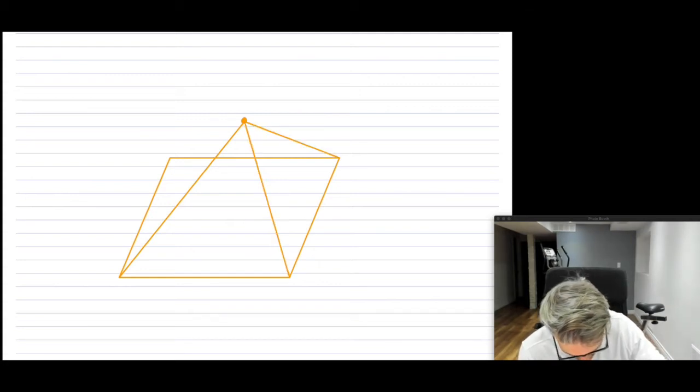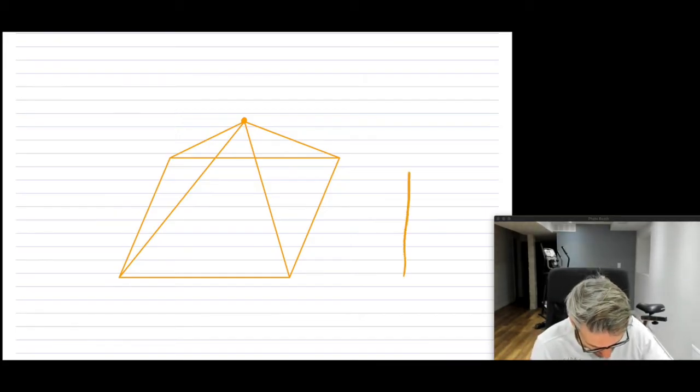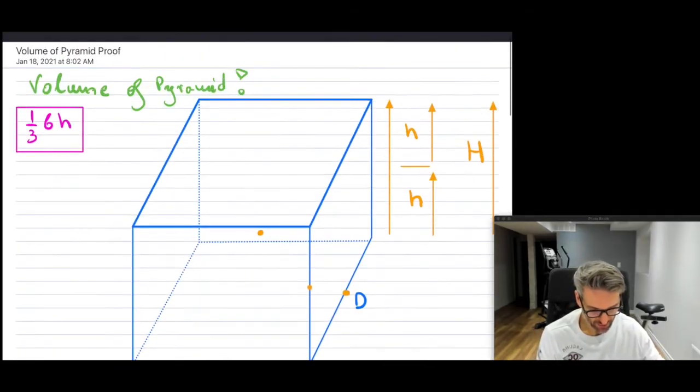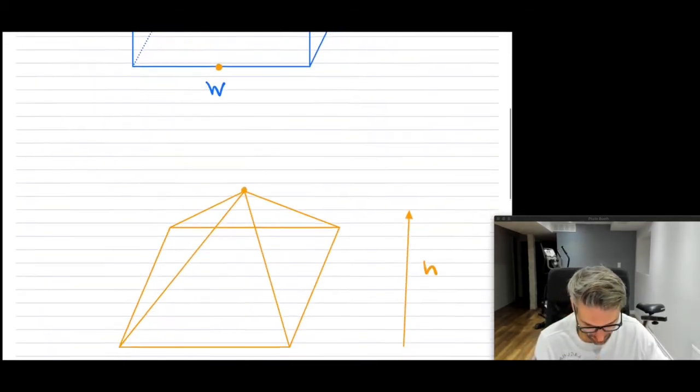So I'm creating this pyramid here. All right, so that's the pyramid right here, where the height of the pyramid is basically the h. All right, it is the half point right here.